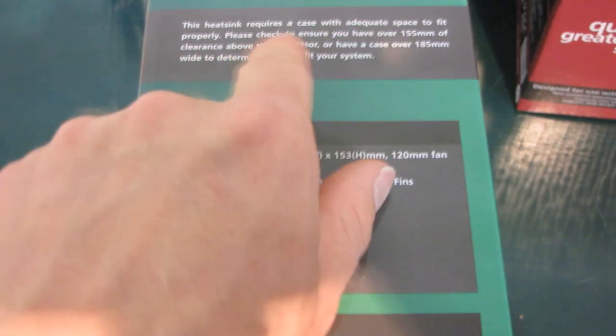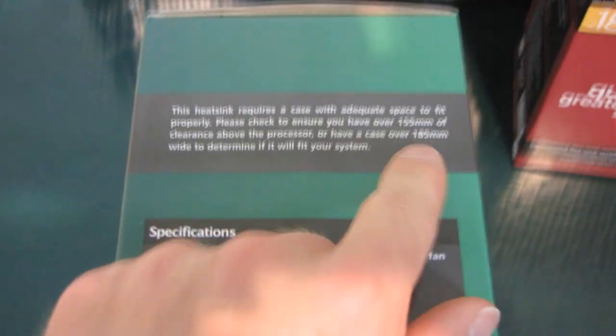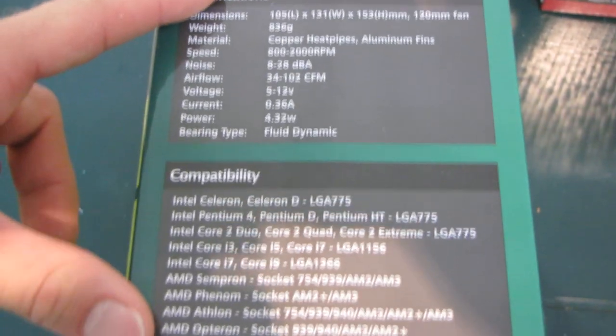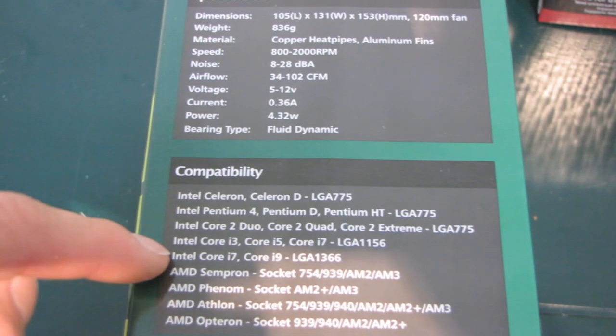The heatsink requires a case with adequate space to fit properly. Check to ensure you have... this is important. If you're thinking of installing this one, check these numbers to make sure it will fit in your system. Here's the overall specifications as well as the compatibility. Pretty much everything.